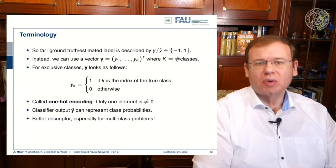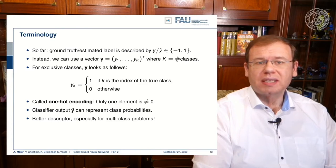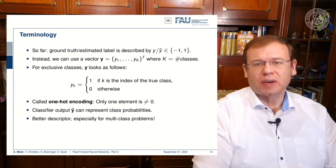But if you want to go into more complex cases you want to be able to classify multiple classes. In this case you probably want to have an output vector, where you have essentially one dimension per class K where K is the number of classes.